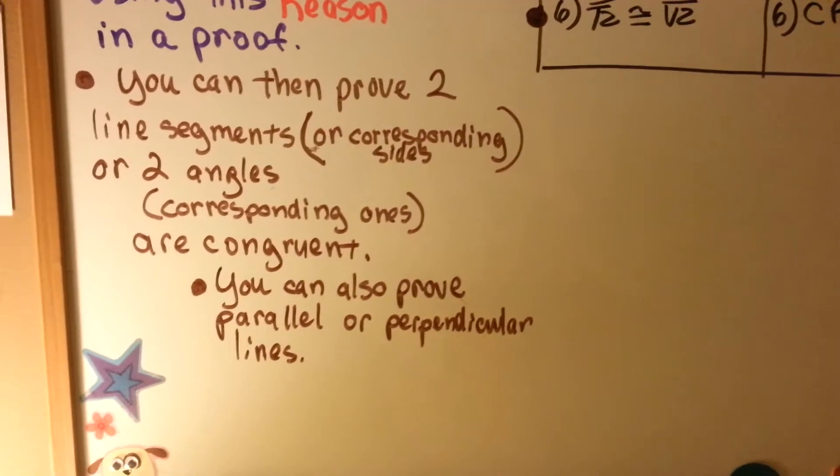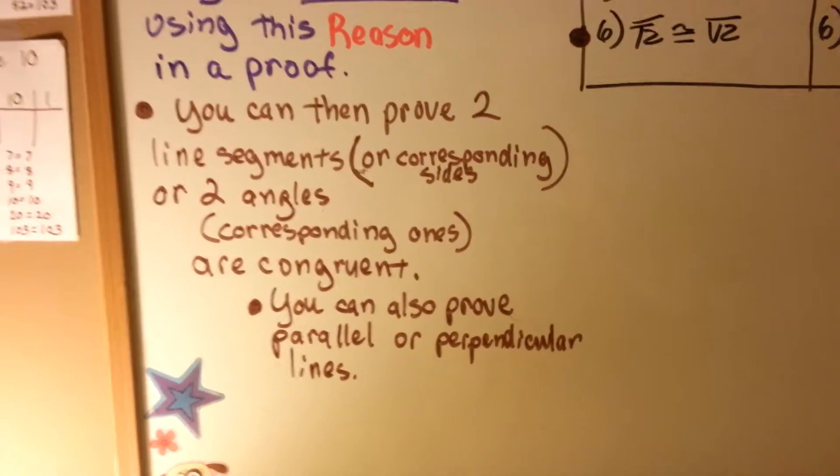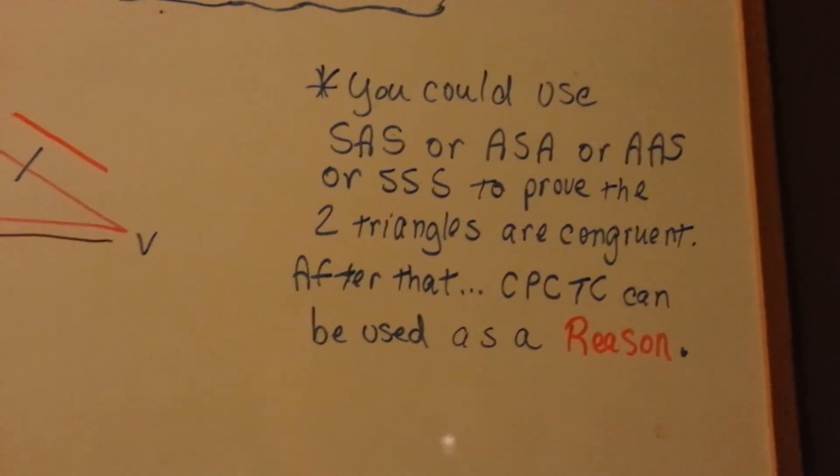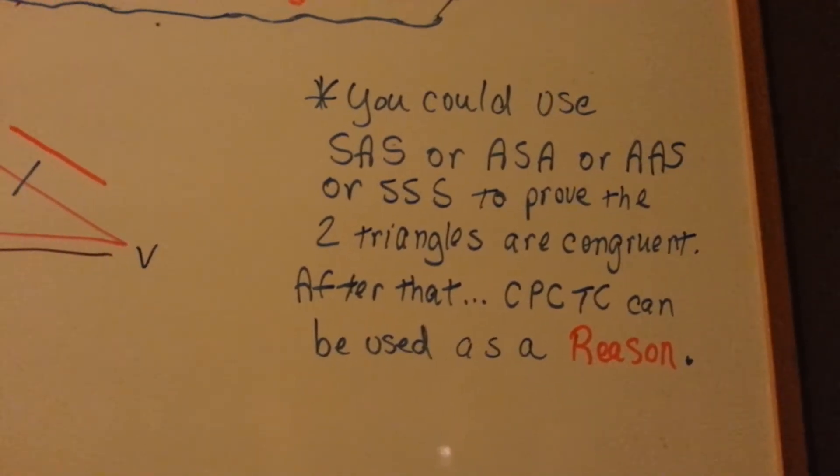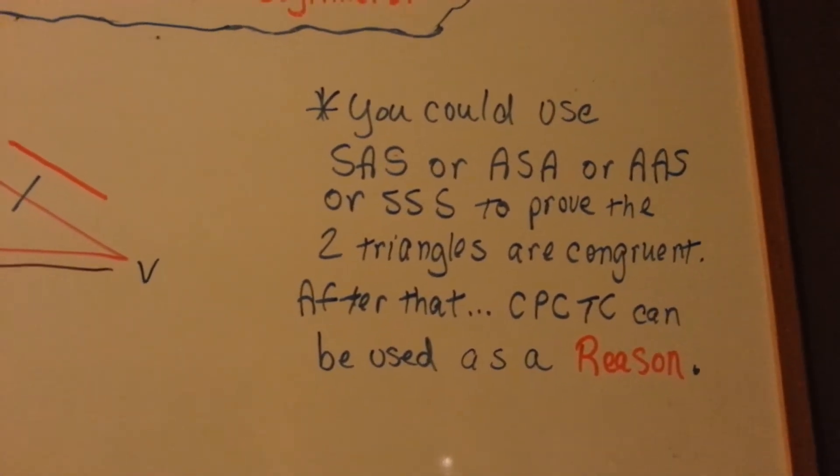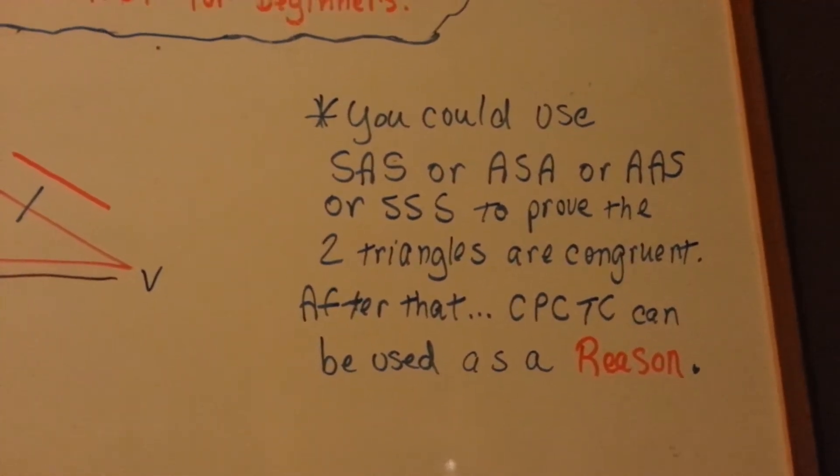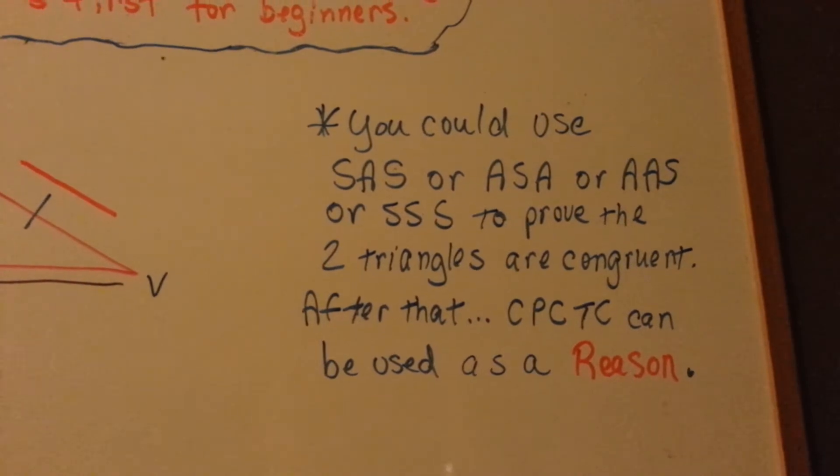You can also prove parallel and perpendicular lines. You can use the SAS or ASA or AAS or SSS to prove the two congruent triangles are congruent. And after that, the CPCTC can be used as a reason.